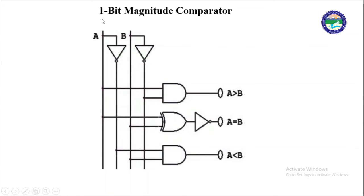We can make the 1-bit magnitude comparator using AND gate, XNOR gate, and NOT gate. We have two inputs A and B. For A equal to B, we will use the XNOR gate — the output of the XNOR gate will give us the A equal to B output. For A greater than B, the A input is attached to an AND gate along with B through a NOT gate, giving us the output A·B̄, which represents the A greater than B case.